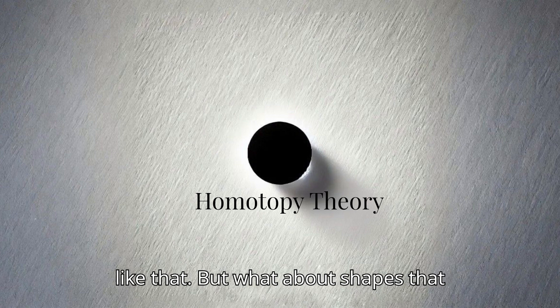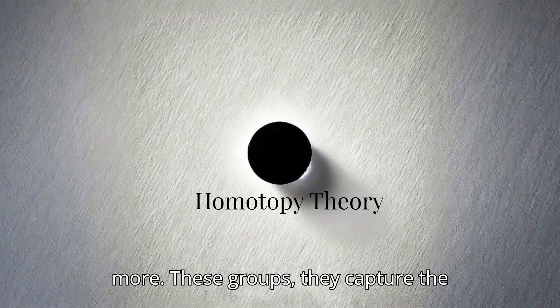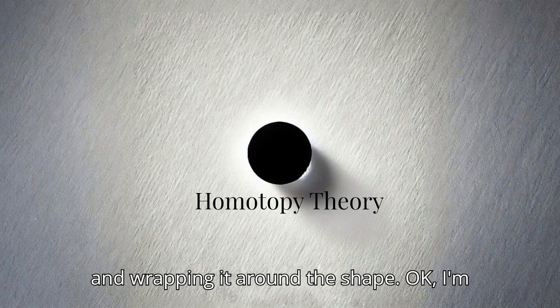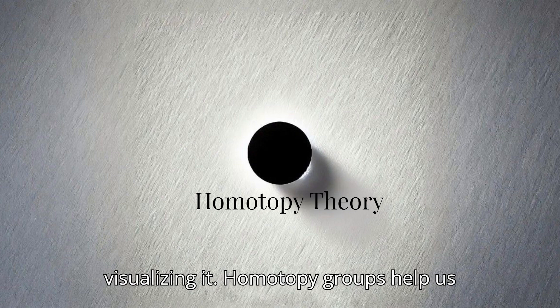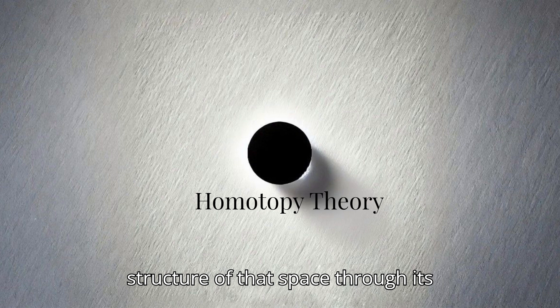Right, the coffee cup and the donut. Exactly. It means if two shapes can smoothly morph into each other, they're essentially equivalent. They're in the same family. So a coffee cup and a donut belong to the same shape-shifting family. You got it. Okay, I like that. But what about shapes that can't be morphed into each other? The rebels. Ah, the rebels. Well, that's where homotopy groups come in. Okay, tell me more. These groups capture the different ways a space can be looped. Imagine taking a string and wrapping it around the shape.